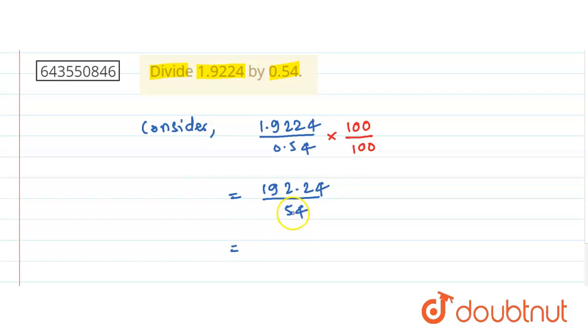54 times 3 is 162. The remainder is 30. Bring down the 2, so the remaining is now 302. With the decimal, this is 3.302 to divide by 54.